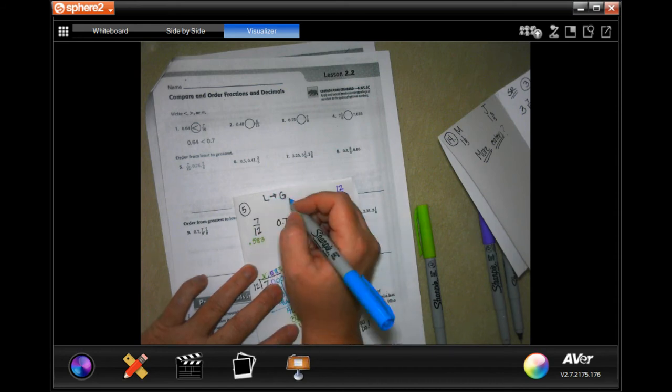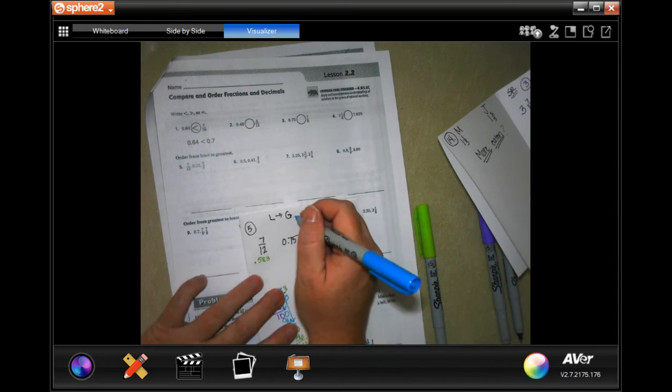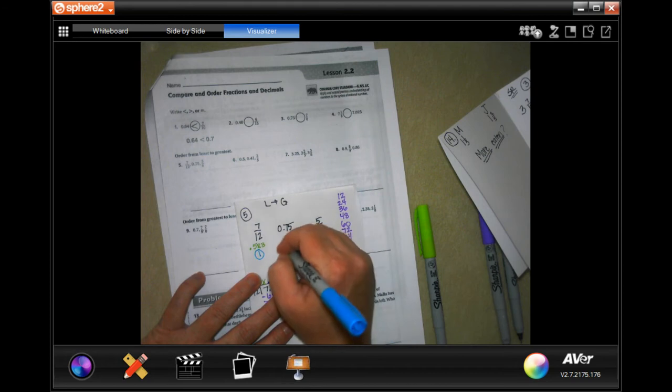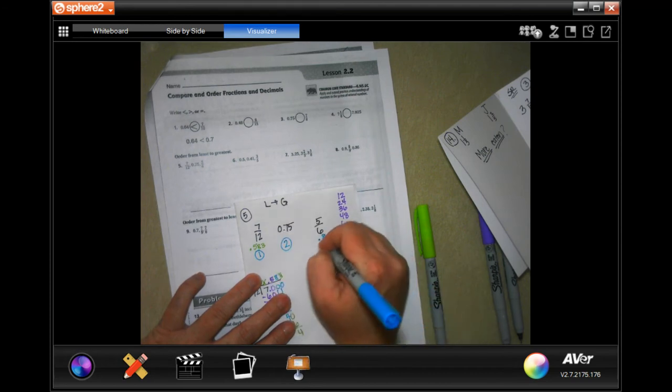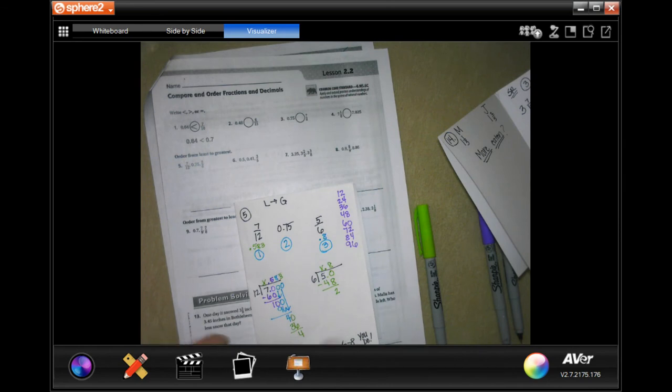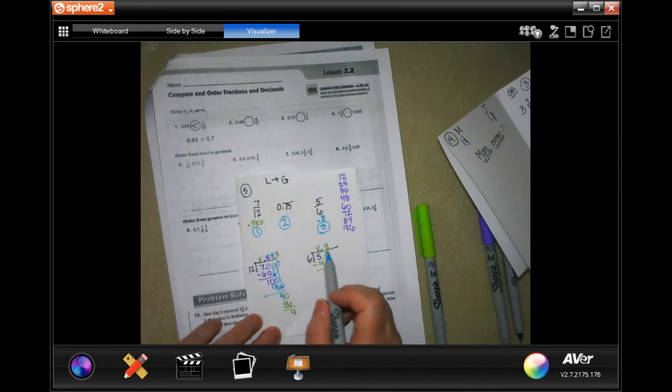Lowest to least to greatest. Which means this one's going to be 0.1, this one's going to be 0.2, and this one's going to be 0.3. Don't have to go any further than that, 0.8. Numbers 6 through 8, you do them. You guys can totally do that.